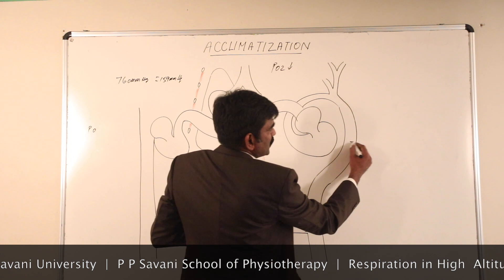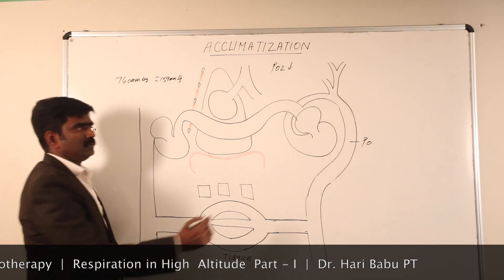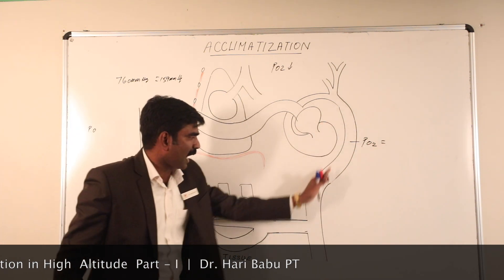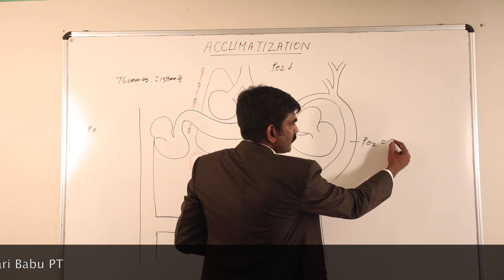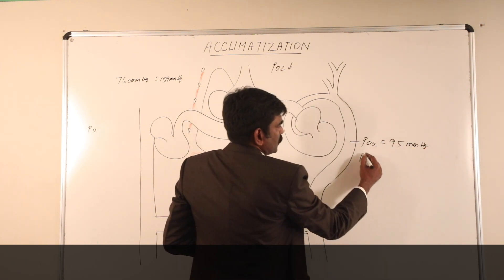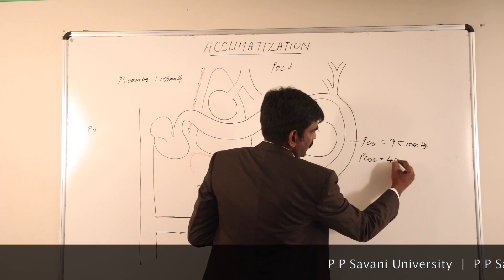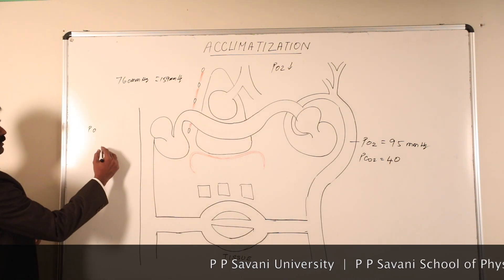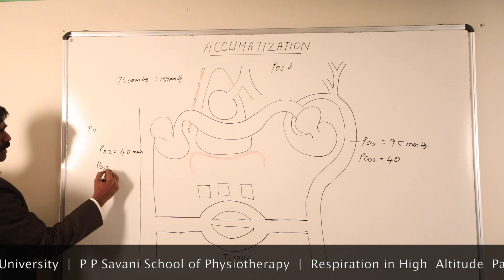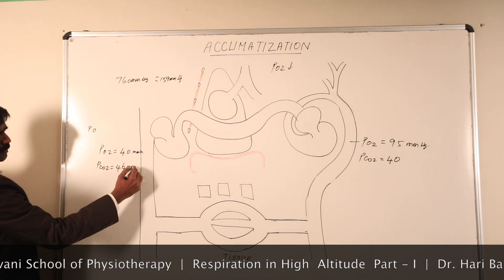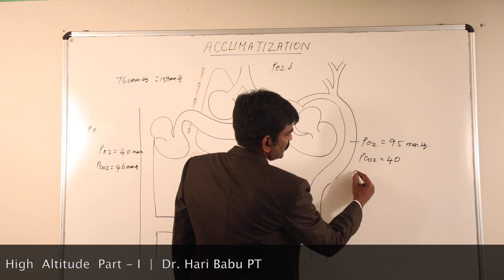I have drawn the left heart and right heart. On the arterial side, the partial pressure of oxygen is 95 mmHg and partial pressure of carbon dioxide is 40 mmHg. On the venous side, partial pressure of oxygen is 40 mmHg and partial pressure of carbon dioxide is 46 mmHg.